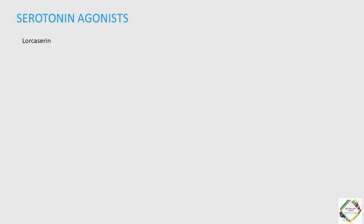The last class of drugs we are going to talk about is the serotonin agonists. The example is Lorcaserin. This is a newer serotonin agonist with selectivity for the 2C serotonin receptor. This drug would activate this receptor, which are almost exclusively found in the central nervous system. When this receptor is activated, it will in turn stimulate the pro-opiomelanocortin neurons, which would further activate the melanocortin receptors and decrease appetite.